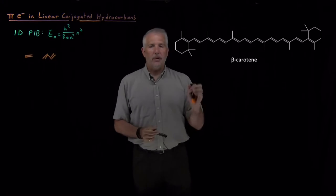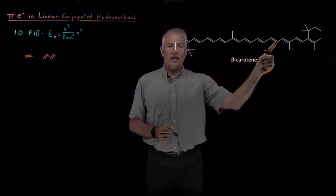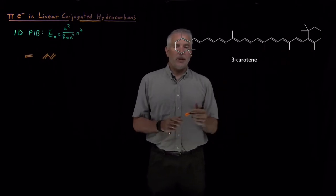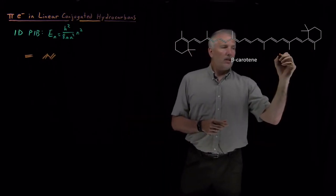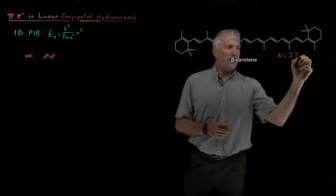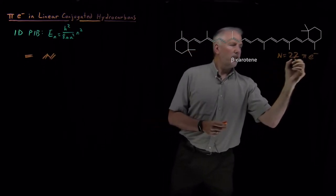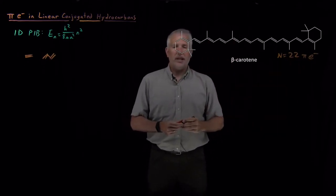So in particular, if we count the double bonds in this molecule, there's 1, 2, 3, 4, 5, 6, 7, 8, 9, 10, 11 double bonds. Each of those double bonds has 2 pi electrons in it. So I've got a total of 22 pi electrons.